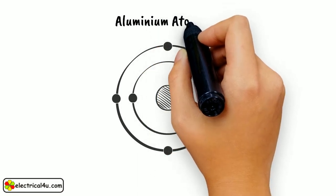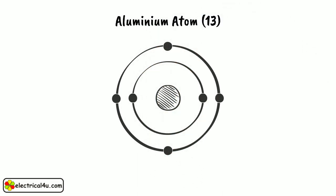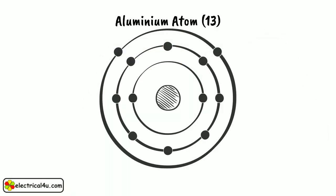Aluminium has atomic number 13. Hence, it has a total of 13 electrons of which 2 electrons occupy innermost shell, 8 electrons occupy next outer shell, and 3 electrons occupy outermost shell.